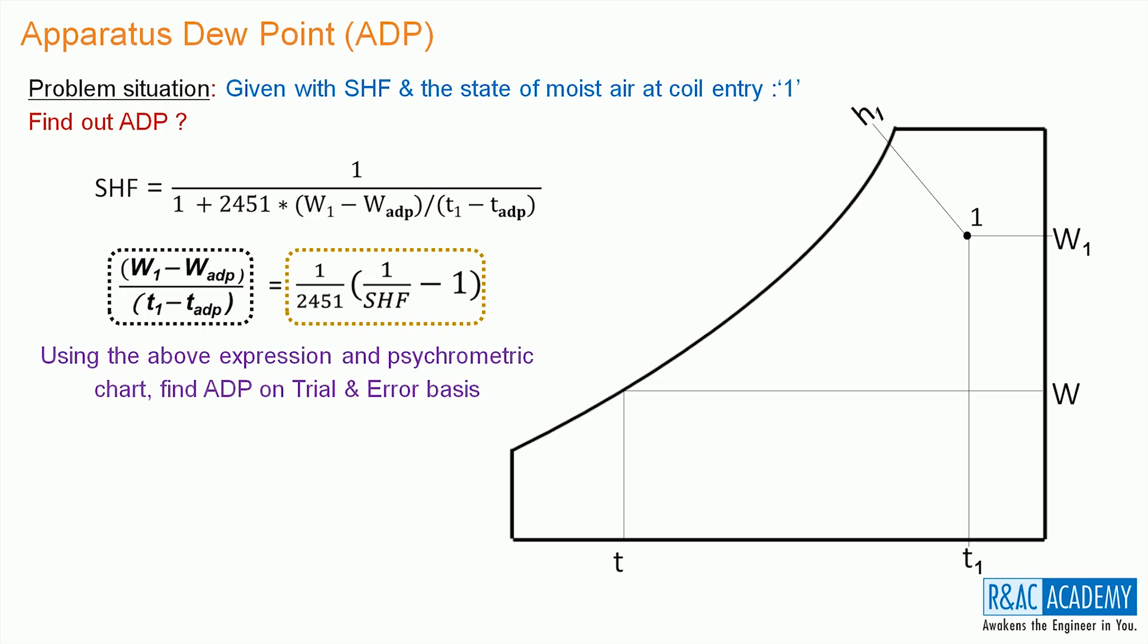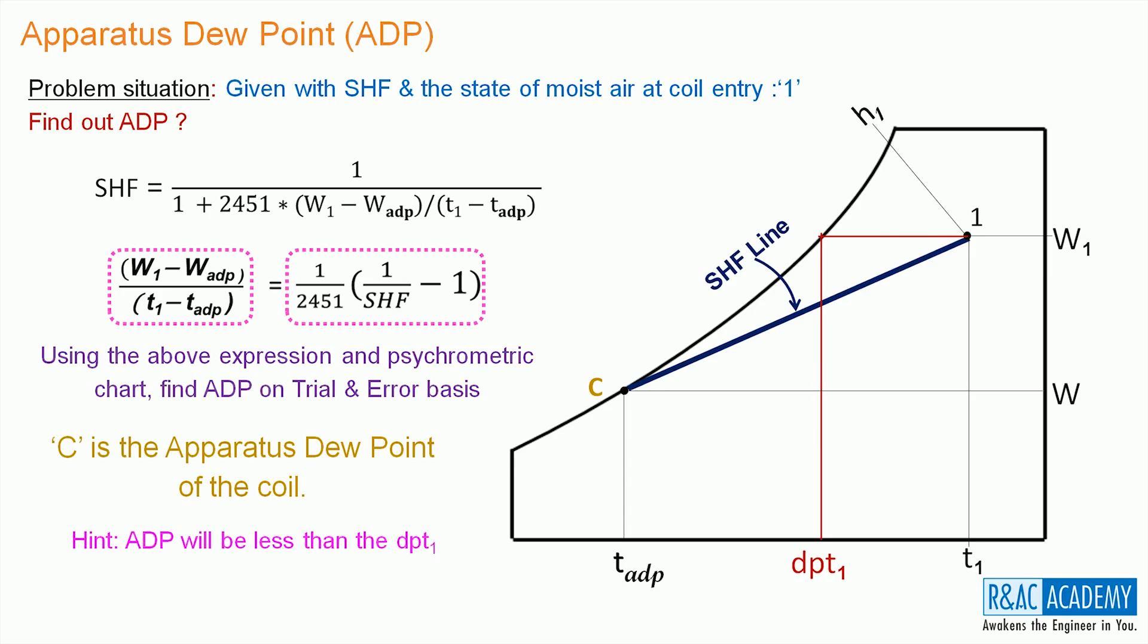If not, change the T value accordingly, collect the corresponding W value from the chart and repeat the process. Whenever the LHS value becomes equal to the RHS value, that temperature is the TADP, that is apparatus dew point temperature. The point C is the coil ADP and this is the sensible heat factor line. A small hint here: ADP will always be less than the dew point temperature of the air at the coil entry.